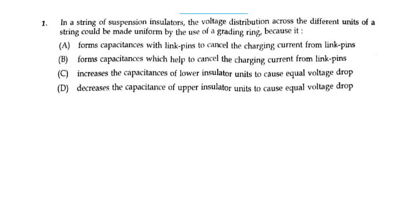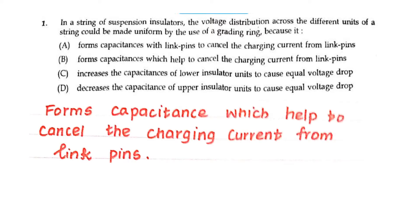In a string of suspension insulators, the voltage distribution across the different units of a string could be made uniform by the use of a grading ring because it forms capacitance which helps to cancel the charging current from the link pins. So that is the answer for the first one.